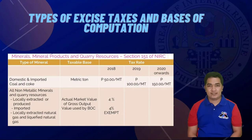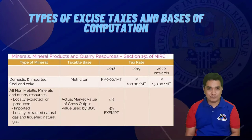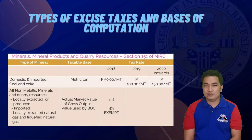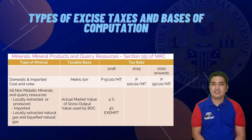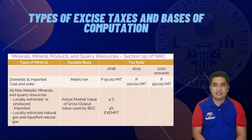For mineral products, Section 151 of the NIRC as amended provides tax rates, type of minerals, and taxable base. For domestic and imported coal and coke, the taxable base is the metric ton. There is a significant increase in excise tax starting 2018, from 50 pesos per metric ton to 150 pesos per metric ton starting 2020 onwards.